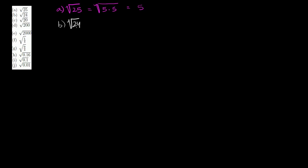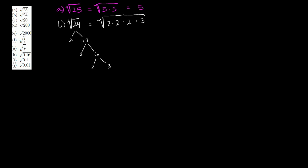What you want to do is get the prime factorization of this number. So 24: this is 2 times 12, 12 is 2 times 6, 6 is 2 times 3. So the square root of 24 is the same thing as the square root of 2 times 2 times 2 times 3. We see one perfect square, so this is the square root of 2 times 2, times the square root of 2 times 3. The square root of 4 is 2, and then times the square root of 6 — or the square root of 2 times the square root of 3.